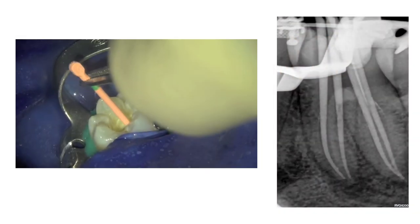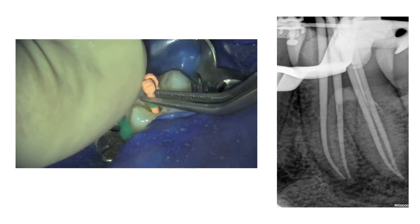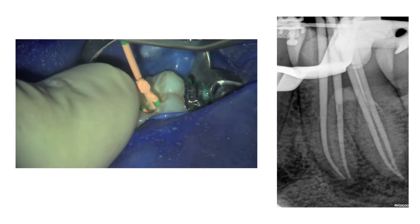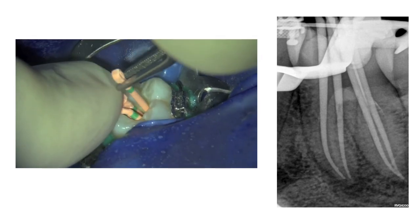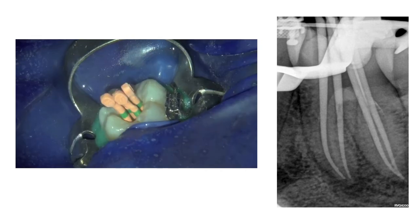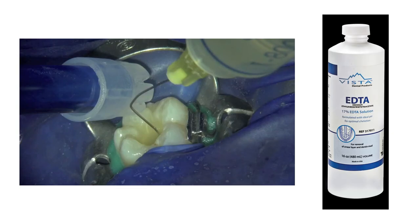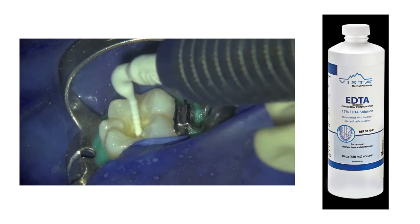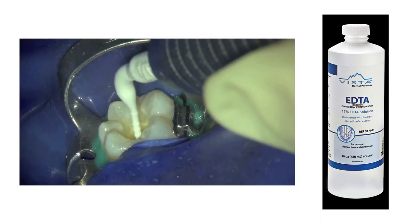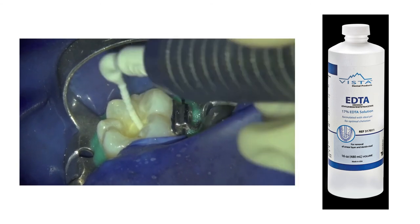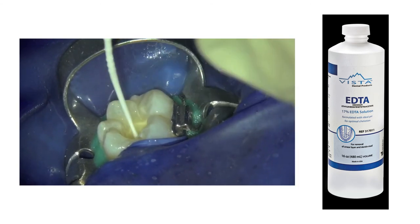After root canal preparation, four size medium WaveOne Gold gutta-percha points were fitted into the prepared root canals and the fit of the cones was verified radiographically. The canals were then filled with 17% EDTA and the solution was activated with the EDDY irrigation device from VDW for approximately 2 minutes to remove the smear layer.